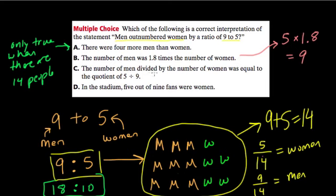C says the number of men divided by the number of women was equal to the quotient of 5 and 9. Well, 5 is the number of women in each group, and 9 is the number of men. So the quotient of 5 and 9, which is 0.5 repeating, that's equal to - excuse me, apologies - 5 over 9 is equal to the number of women over the number of men. Women divided by men.